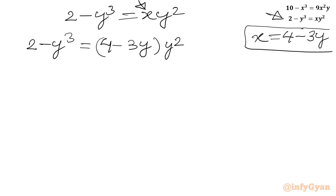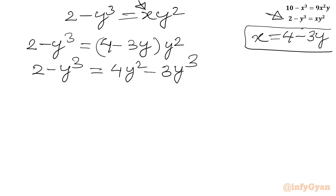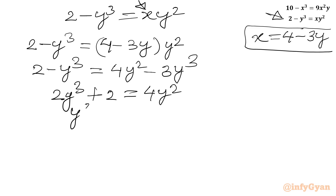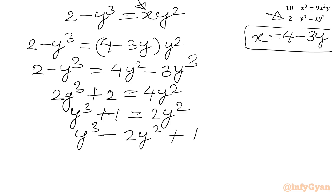Simplifying the RHS: 2 minus y³ equals 4y² minus 3y³. Rearranging gives 2y³ plus 2 equals 4y². Dividing by 2: y³ plus 1 equals 2y², or y³ minus 2y² plus 1 equals 0.